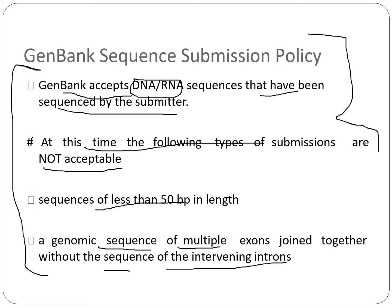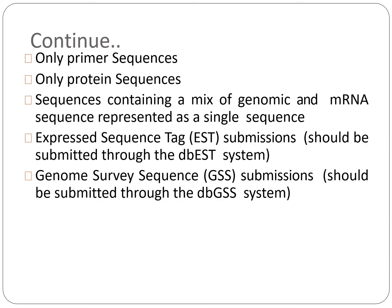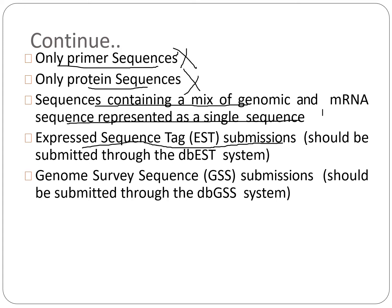Continuing with those policies: only primer sequences and only protein sequences are not allowed. Sequences containing a mix of genomic and mRNA sequences represented as single sequences are not allowed either. Expressed sequence tag (EST) submissions should be submitted through the dbEST system, and Genomic Survey Sequences (GSS) submissions should be submitted through the dbGSS system — not through genomic databases.